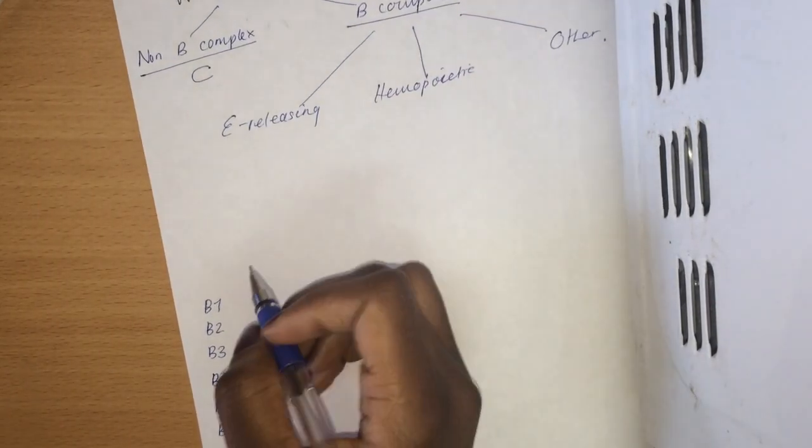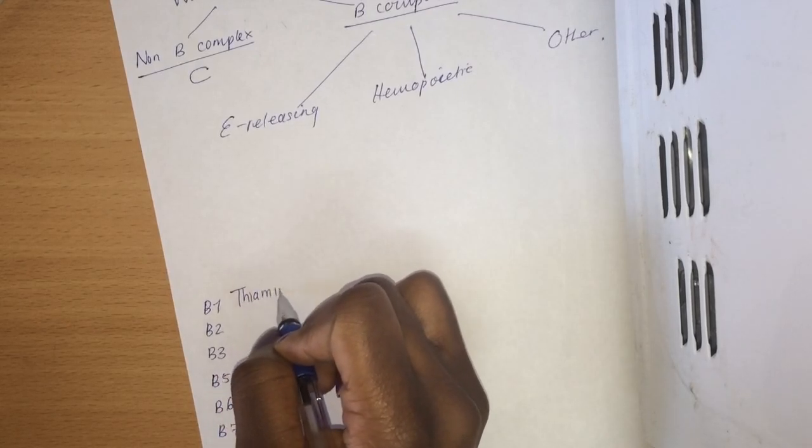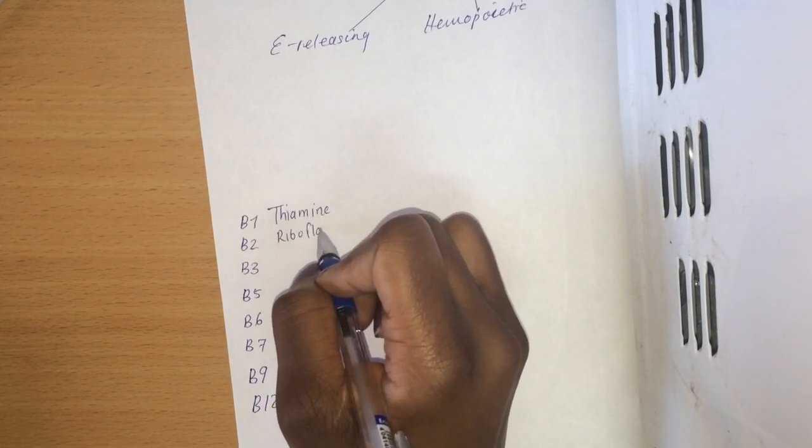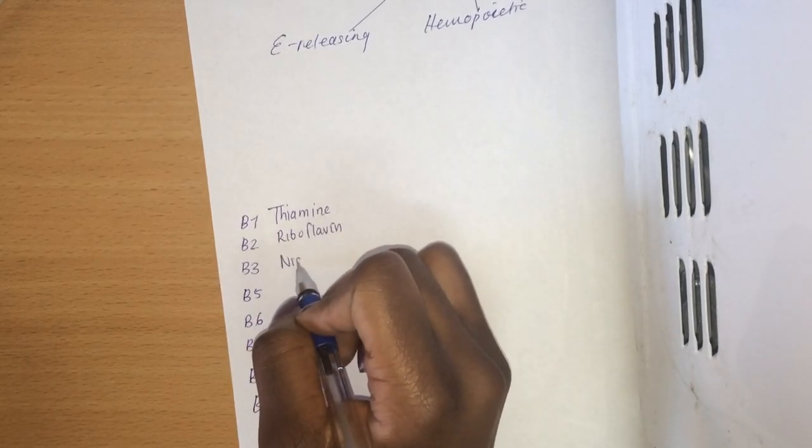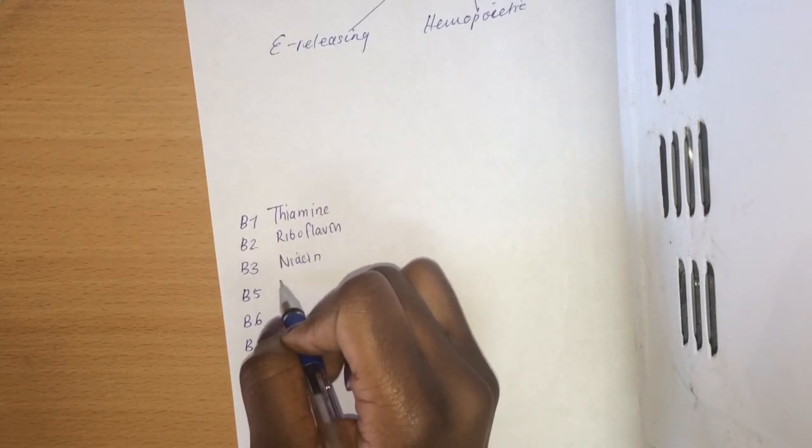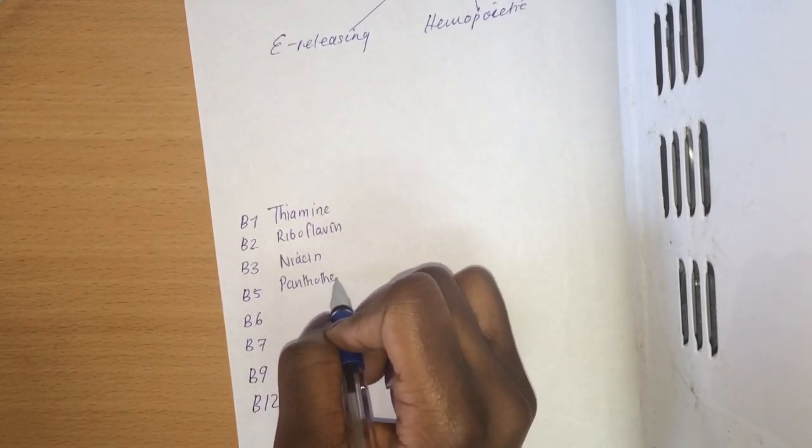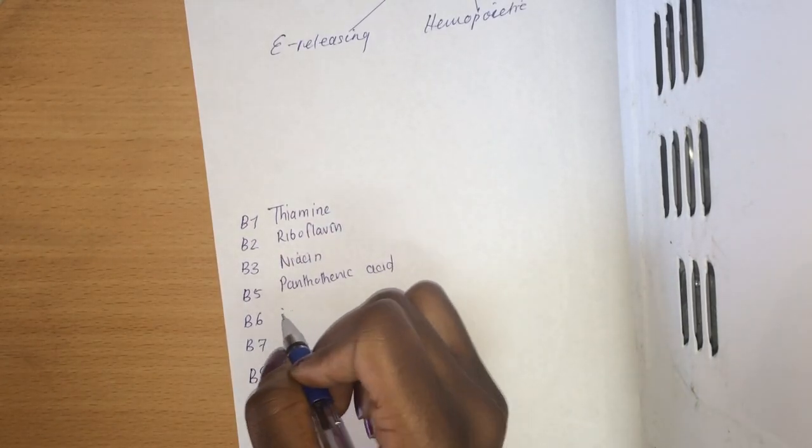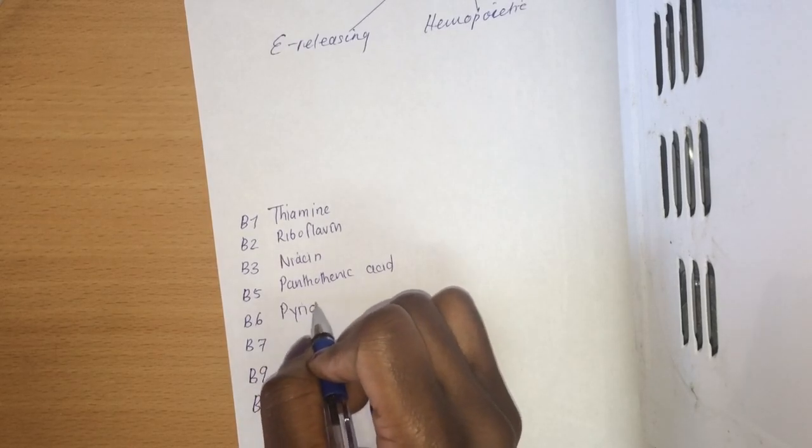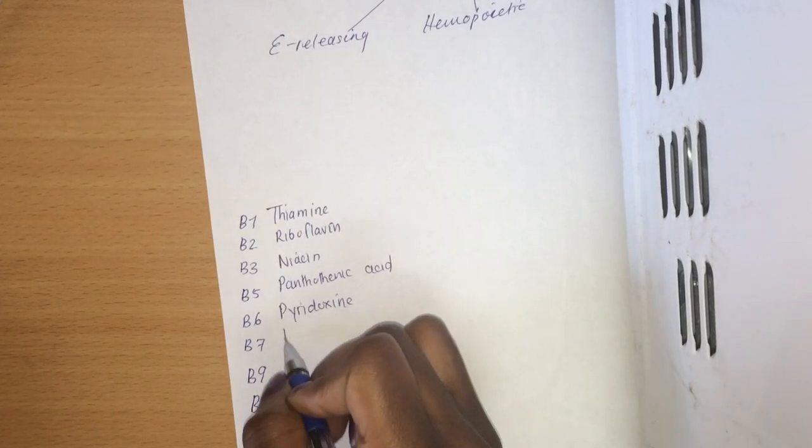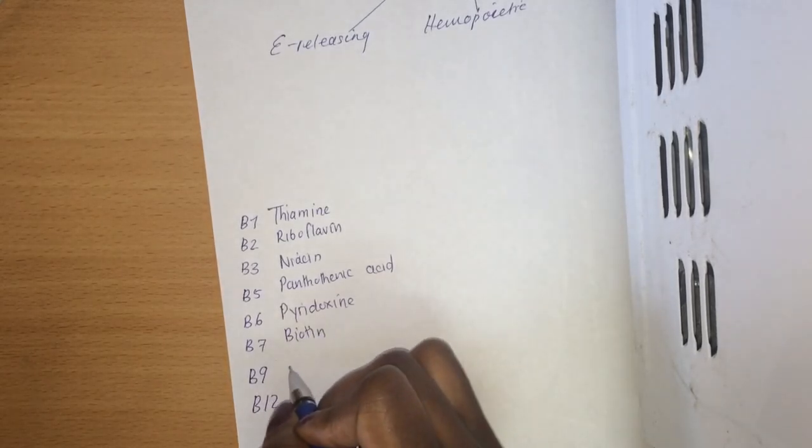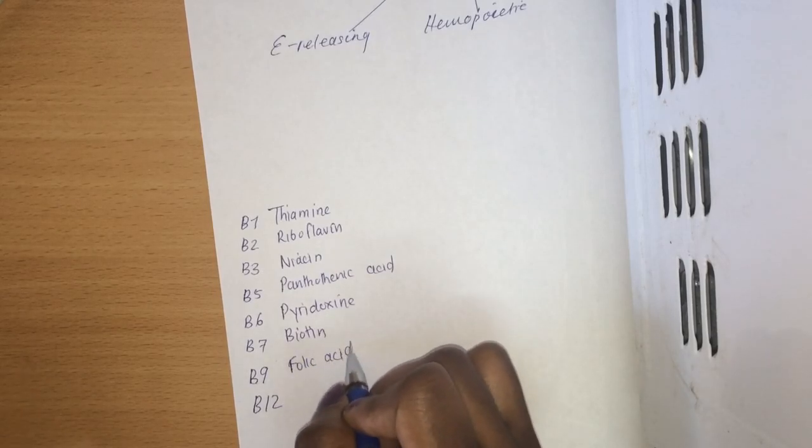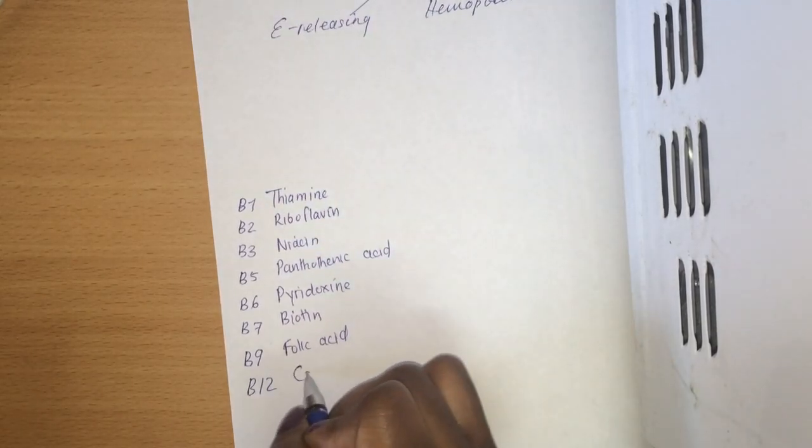For each number is an allocated name. For B1 it is thiamine, B2 is riboflavin, B3 is niacin, B5 is pantothenic acid, B6 is pyridoxine, B7 is biotin, B9 is folic acid, and finally B12 is cobalamin.